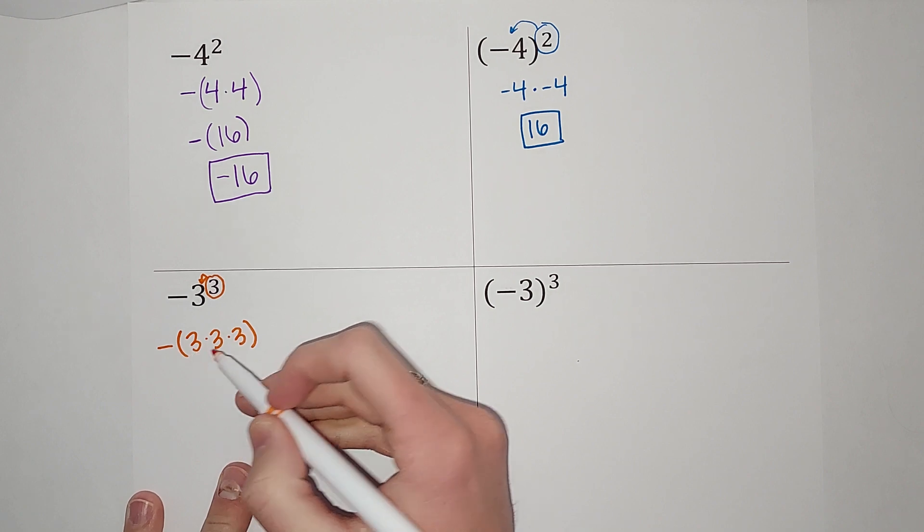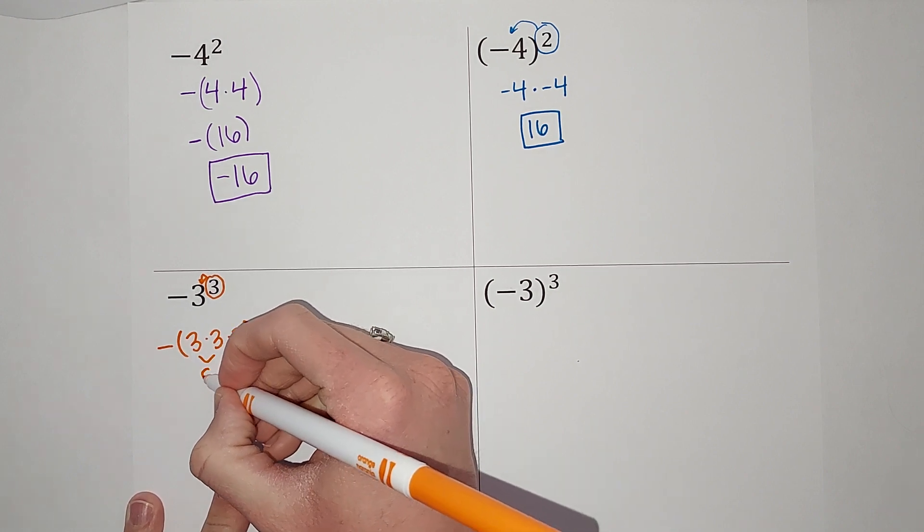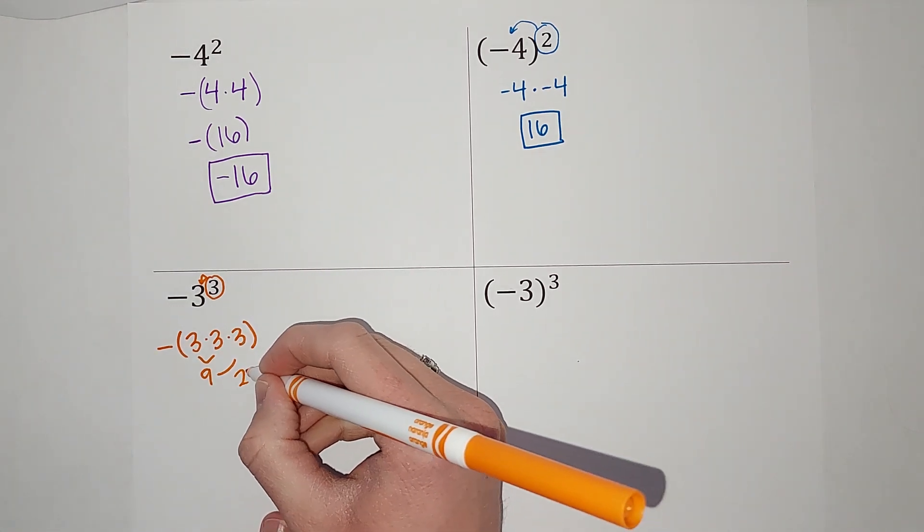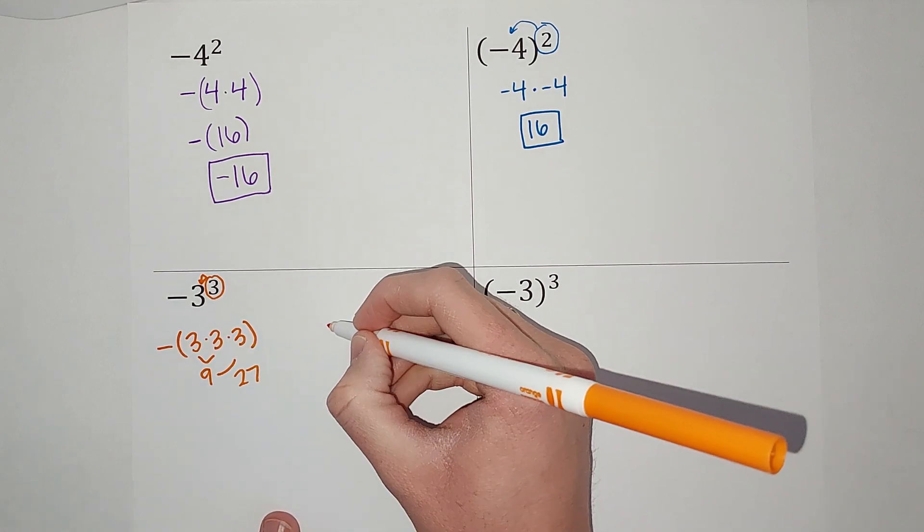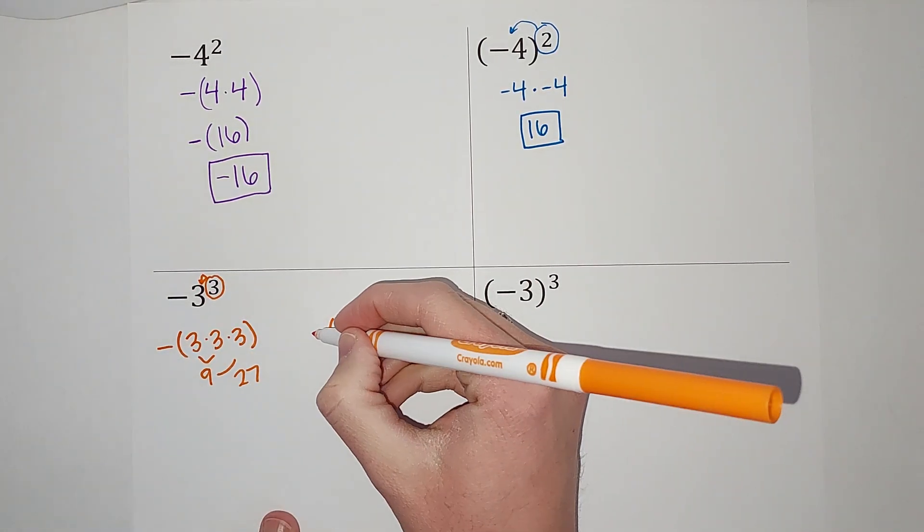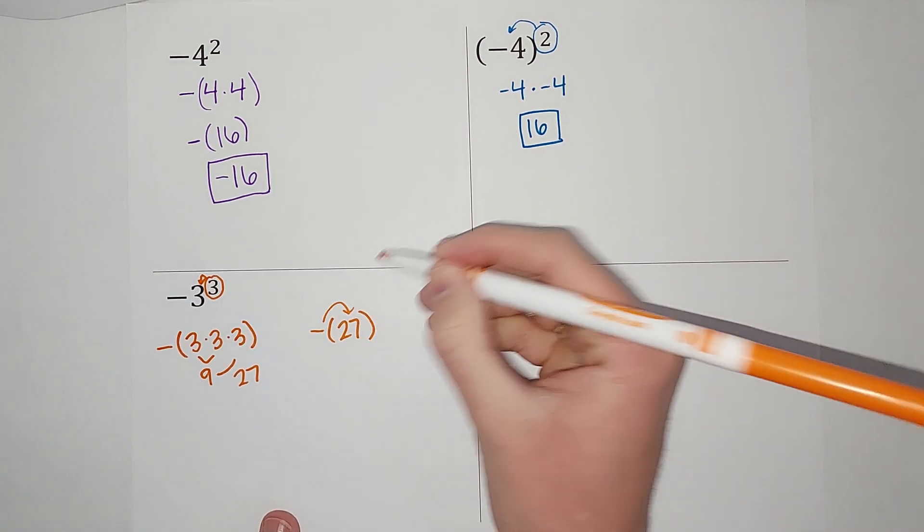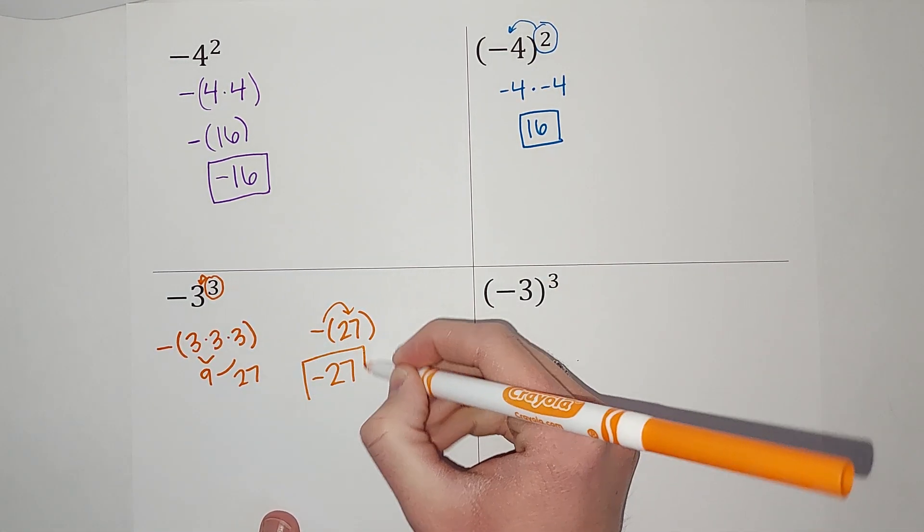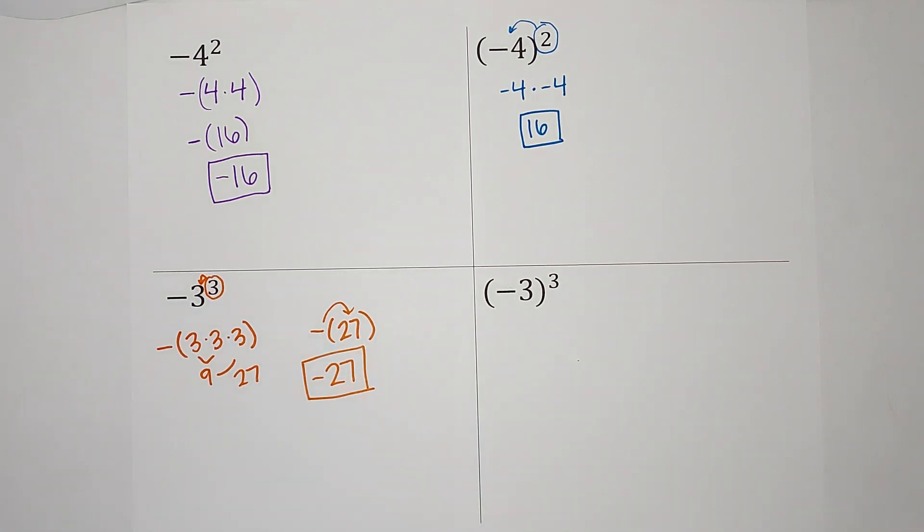All right, so three times three gives me nine. Nine times three gives me 27. That's what's inside my parentheses, 27, and I still have that negative out front, which gets distributed in, so my final answer is negative 27.